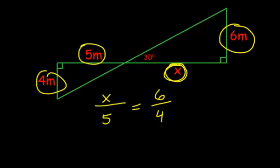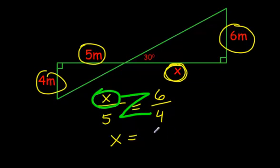Use the Zorro method. Start at the part you don't know. Go across, diagonal, and across. Multiply the first two numbers you meet. 6 times 5 is 30. Then divide by 4. So 30 divided by 4, I can do that one in my head, is 7.5. And you can put meters. We now know that this length here is 7.5 meters.